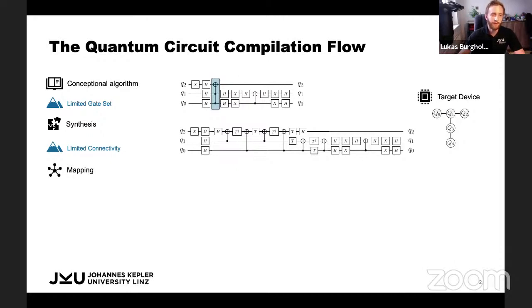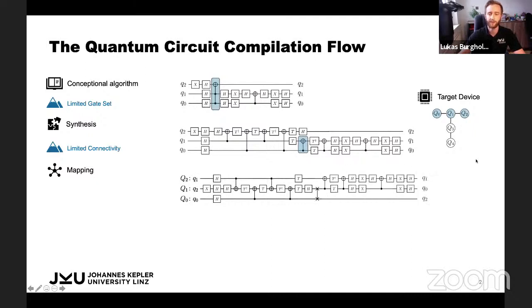In the mapping step, we first pick some qubits, let's say the top three, and we pick an initial layout, how to assign the logical qubits to the physical ones. Then we can apply some of the gates straight away, but not all of them. For example, this CNOT, there's no connection between Q0 and Q2 on the device. So we need to insert a swap gate, which dynamically changes this mapping, and we can apply the rest of our gates.